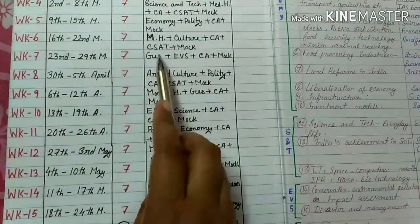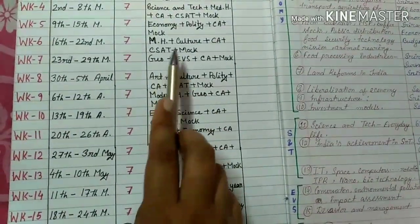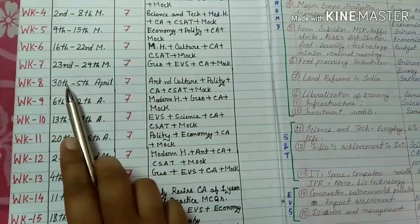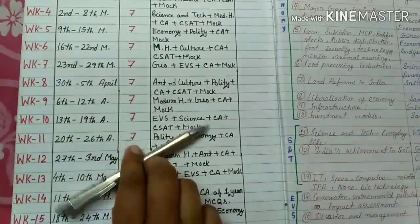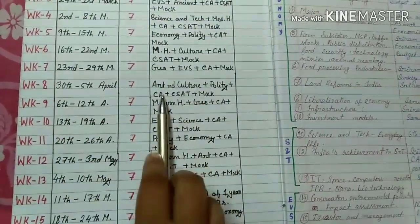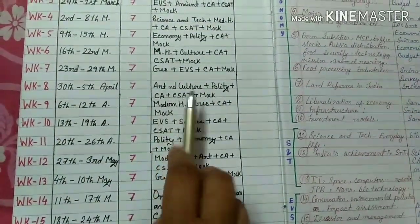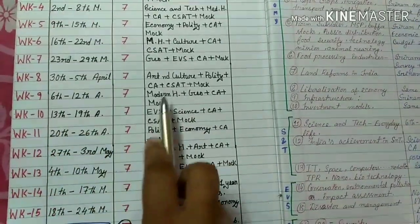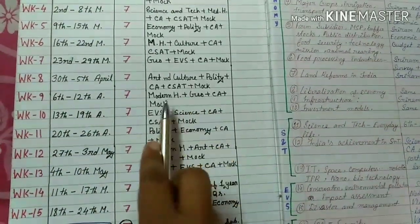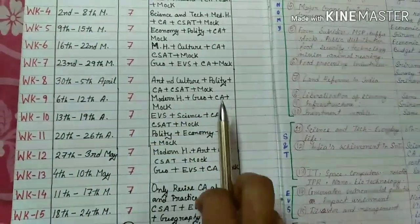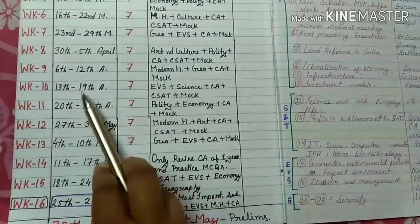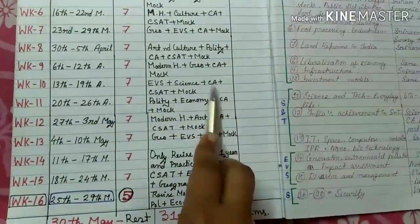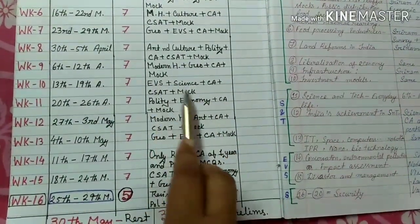The seventh week covers geography, EVS, current affairs, and mock. The eighth week covers art and culture, polity, current affairs, CSAT, and mock test. The ninth week covers modern history, geography, current affairs, CSAT, and mock.